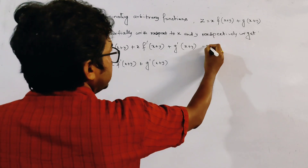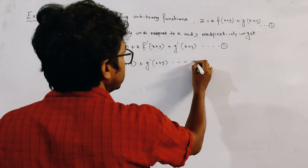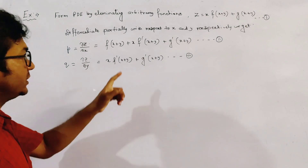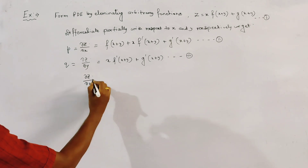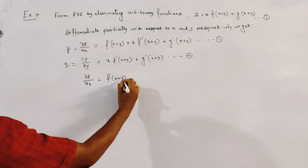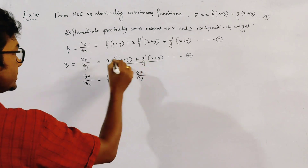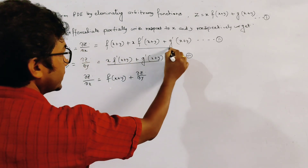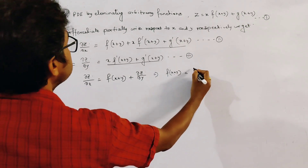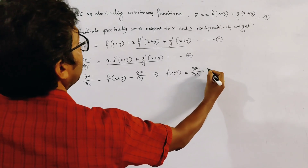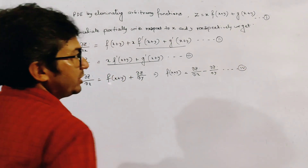We name the original relation as relation 1, the first derivative with respect to x as relation 2, and the derivative with respect to y as relation 3. From relations 2 and 3, since x into f dash (x plus y) plus g dash (x plus y) equals del z by del y, we substitute and get f of (x plus y) equal to del z by del x minus del z by del y. We name this as relation 4.